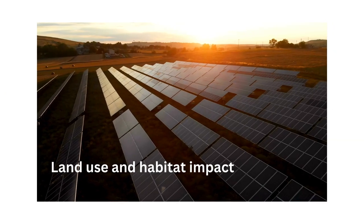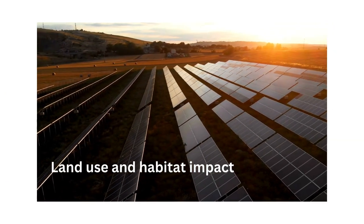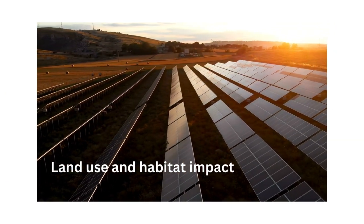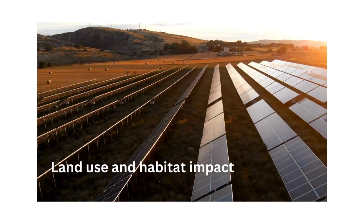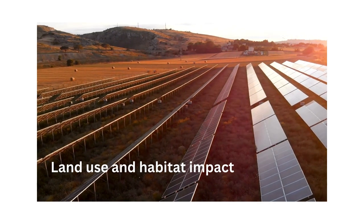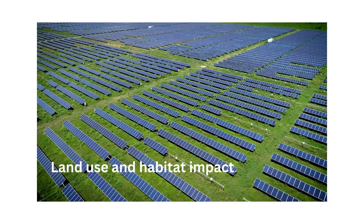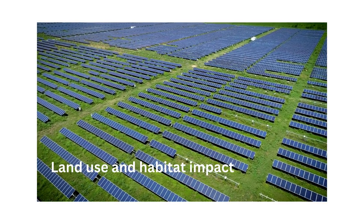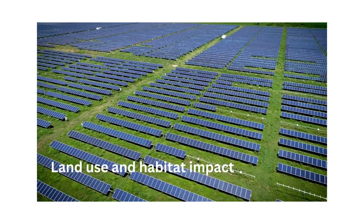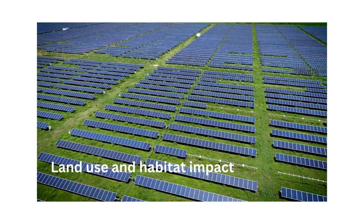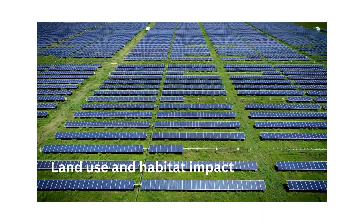Large-scale solar installations, such as solar farms, can require significant land area for deployment. This may involve land conversion from natural habitats or agricultural land, potentially impacting biodiversity, ecosystems, and local communities. However, solar installations can also be designed to minimize habitat disruption and incorporate measures such as pollinator-friendly vegetation or controlled grazing by sheep to maintain ecological functions.